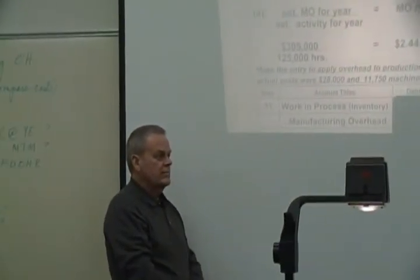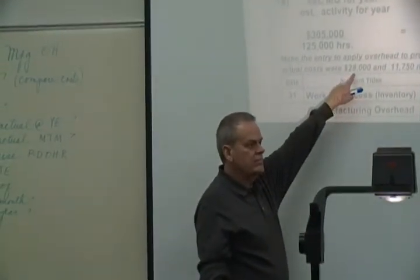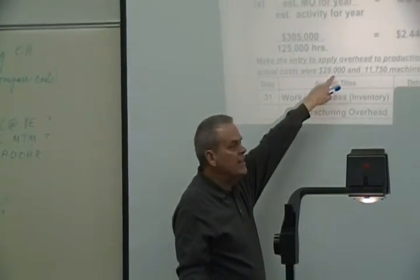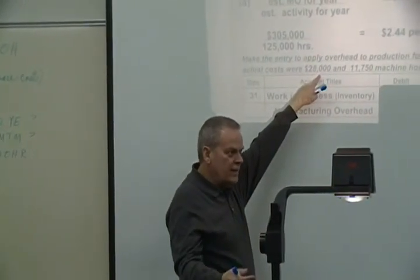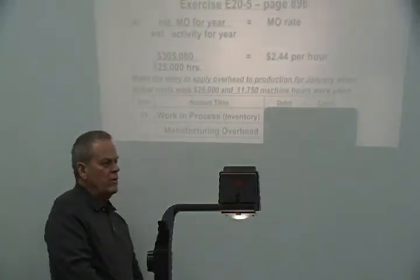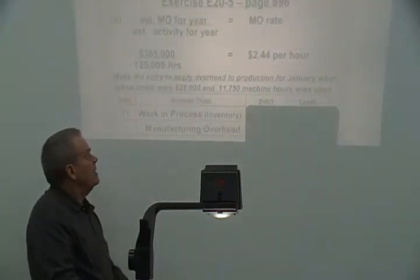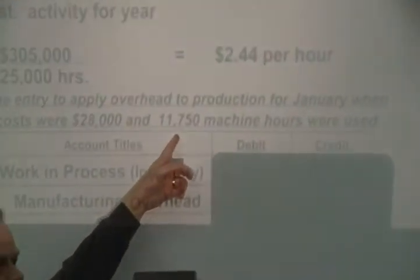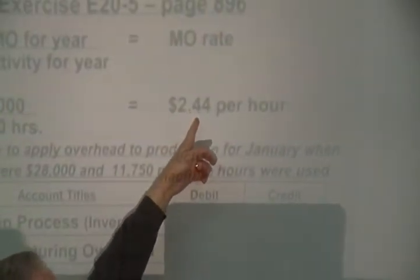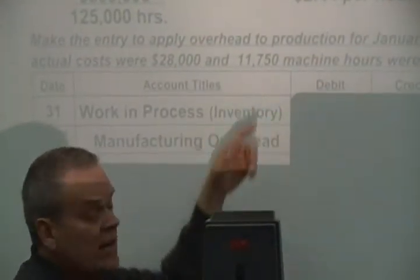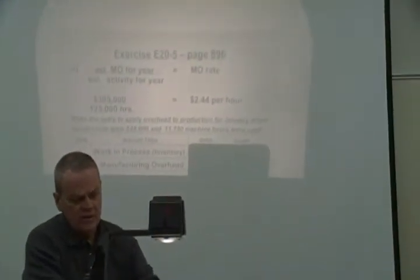Which number should we use? Not $28,000 — that was the actual cost already in the account. We're looking for the applied amount. We multiply machine hours by our rate: 11,750 hours times $2.44 equals $28,607. So the journal entry is debit work in process and credit manufacturing overhead for $28,607.